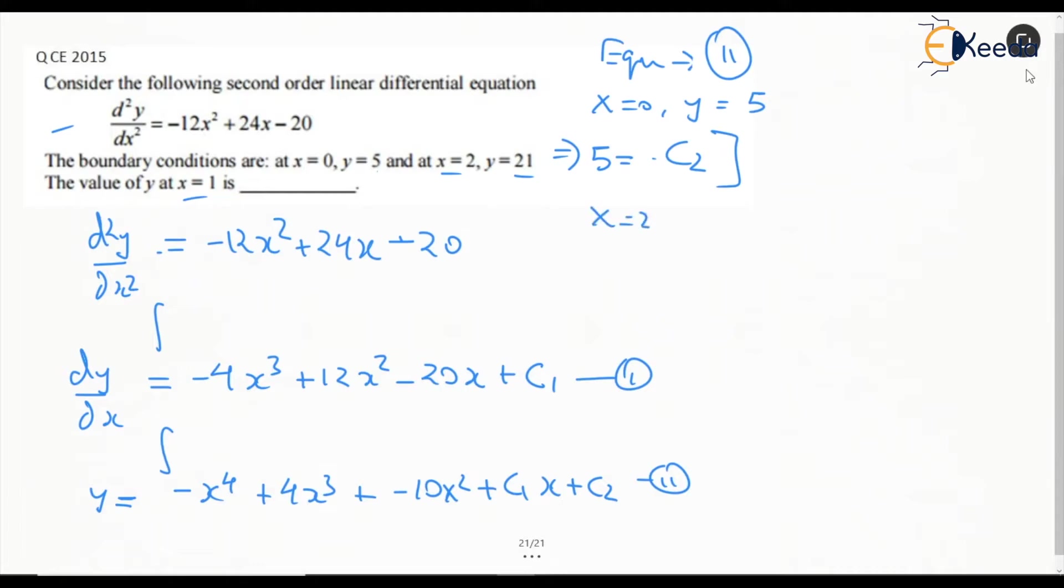For the condition x=2 and y=21, this gives 21 = -16 (2⁴), then +32 (4×2³)...